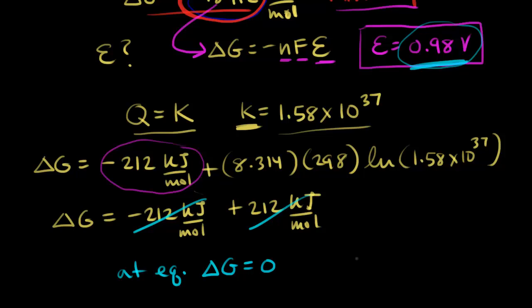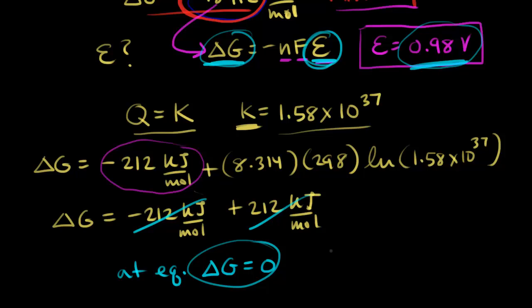At equilibrium, delta G equals zero, so what is the voltage of our cell? Plugging delta G equals zero into delta G equals negative NFE, the cell potential E must equal zero volts. The voltage is zero when our redox reaction reaches equilibrium — the cell dies, your battery is dead. Hopefully this helps you understand galvanic cells in terms of changes in free energy.